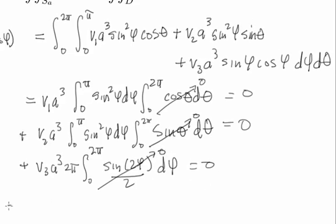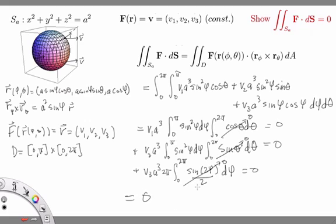And so this third term is 0, and so in fact the entire double integral is equal to 0. And therefore we conclude that the flux of this constant vector field through the surface of the sphere is equal to 0.